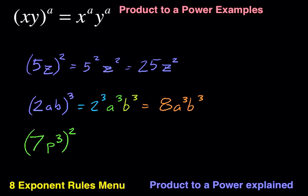So we just have to pay attention to our rules. The product to a power rule says that we apply the squared to all parts of this product. And the product is really 7 times p cubed. So we're going to say 7, and we're going to apply the squared to that.